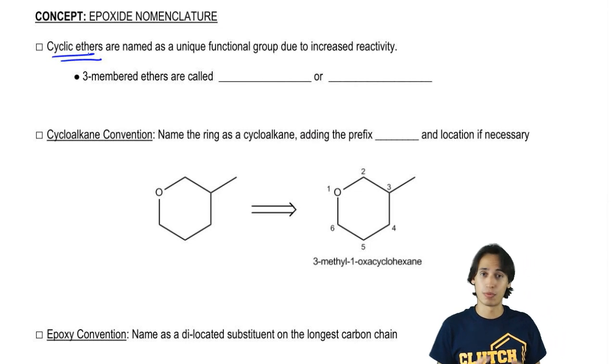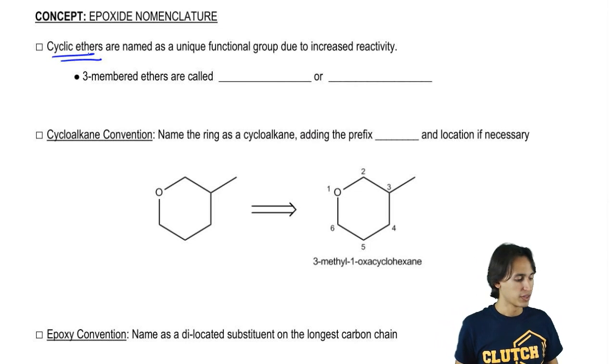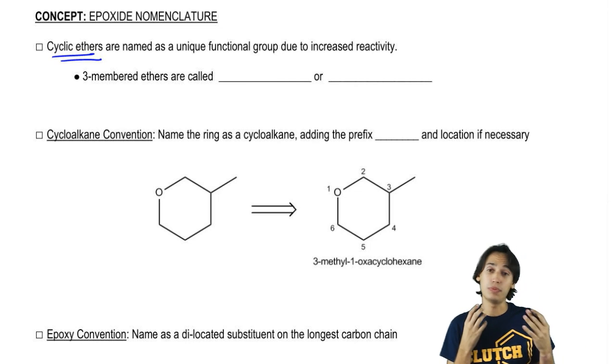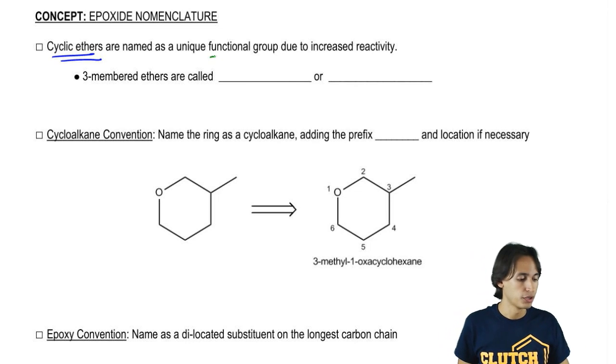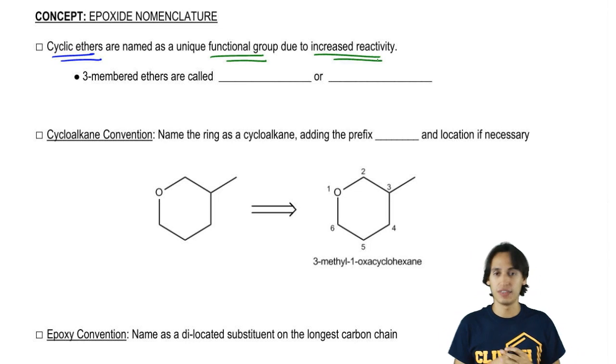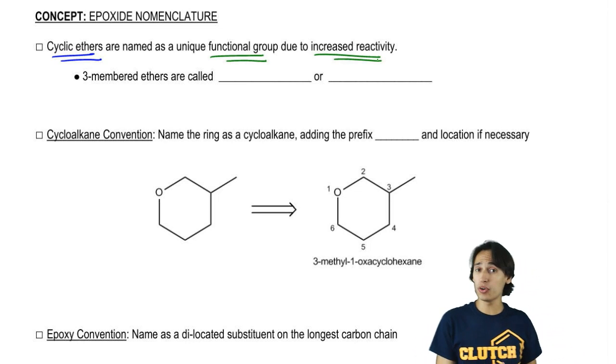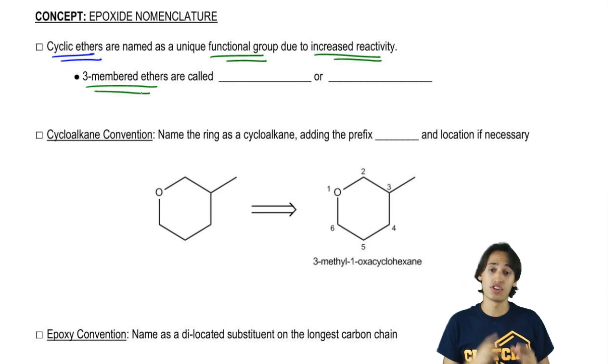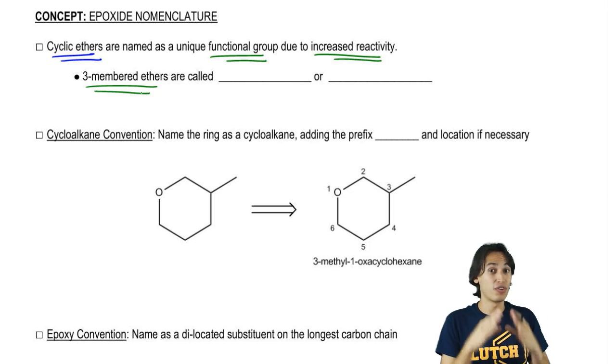Some types of cyclic ethers – remember that an ether is ROR – are going to be named as their own functional group due to increased reactivity. The specific ones that we usually name as their own functional group are three-membered cyclic ethers because there happens to be a lot of strain in those rings. They're out of their normal bonding preferences or angle preferences. What that means is that they're very reactive and it's very easy to open them up.